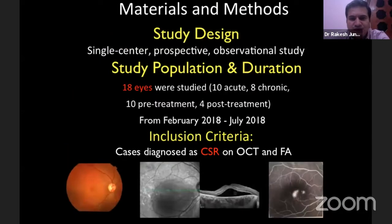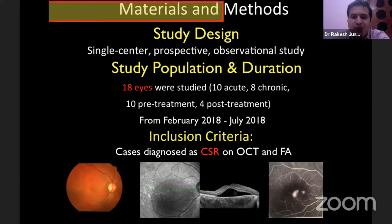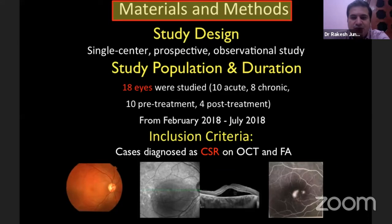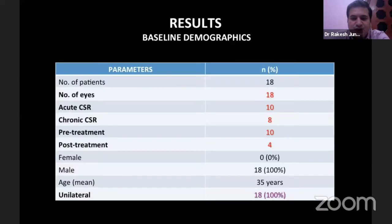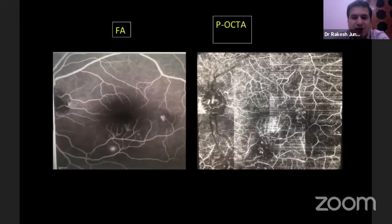It was a single-center prospective study. 18 eyes were recruited: 10 had acute CSR, 8 had chronic, and there were 10 pre-treatment and 4 post-treatment cases over a six-month study period. Cases were diagnosed on the basis of OCT and fluorescein angiography. These are the baseline demographics.